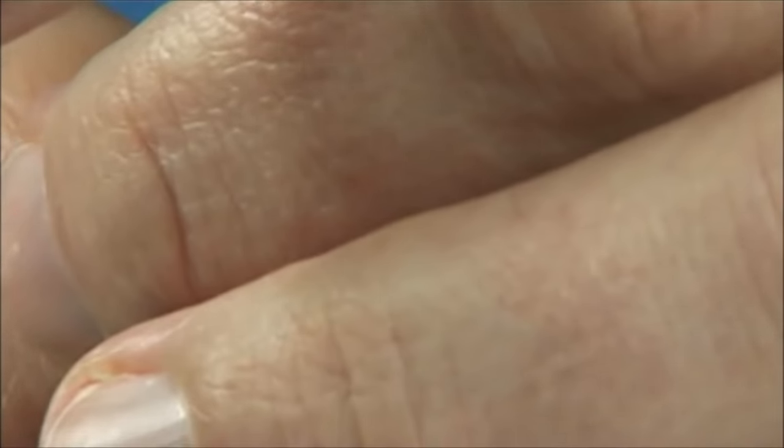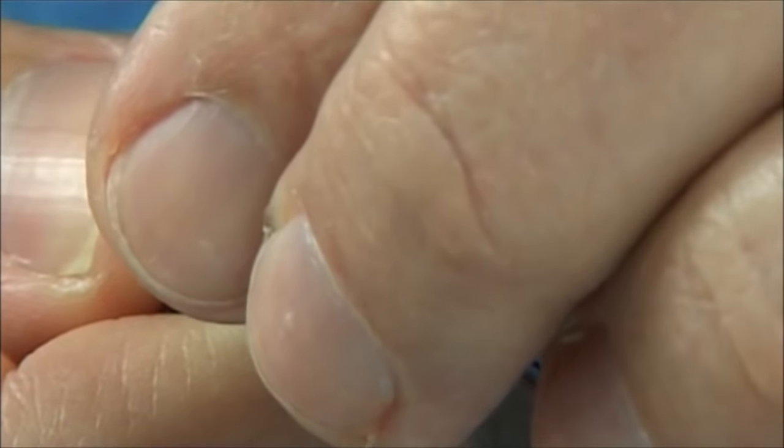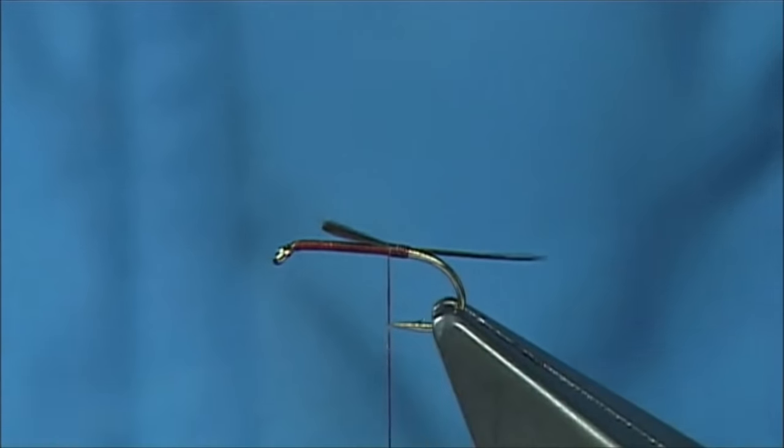Then remove the excess but the length of the body or to the point where you'll be tying in the hackle which is about a millimeter and a half from the eye.